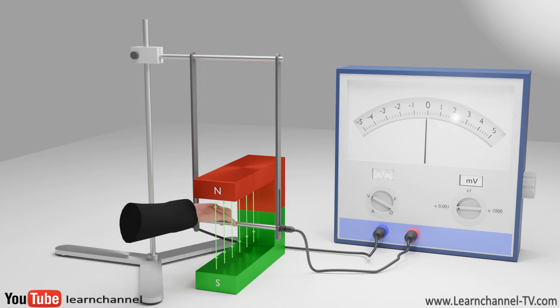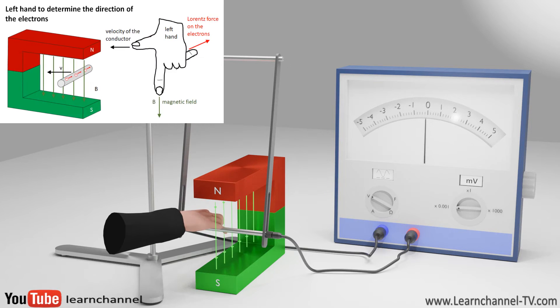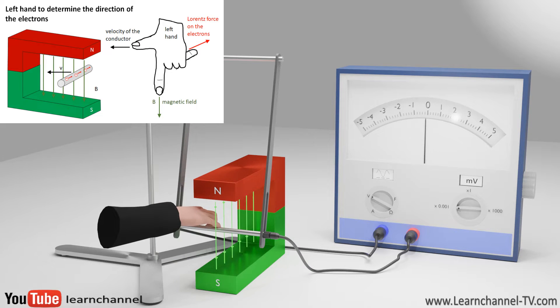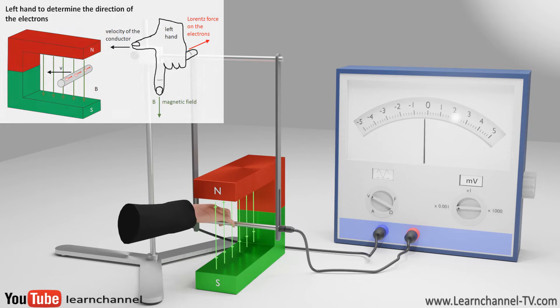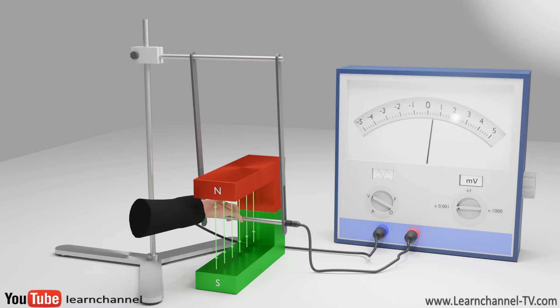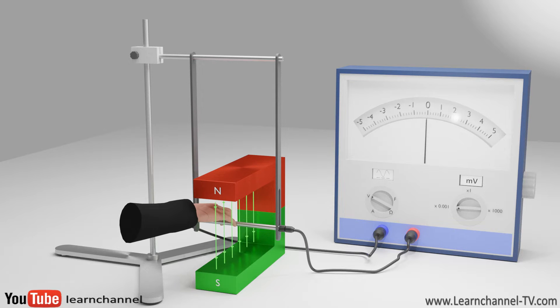To explain this effect, the reason for this induced voltage is the so-called Lawrence force, which acts on the electrons of the conductor bar. The resulting direction of movement of the electrons can be determined by the left-hand rule. So far, we have only moved the conductor bar perpendicular to the magnetic field lines. Now we move the ladder stick up and down. No voltage is induced if the conductor bar is moved parallel to the magnetic field lines. Or in other words, the conductor bar does not intersect the magnetic field lines.